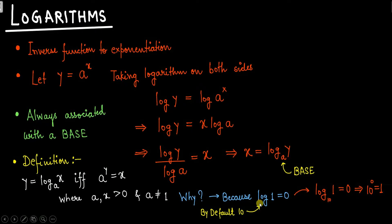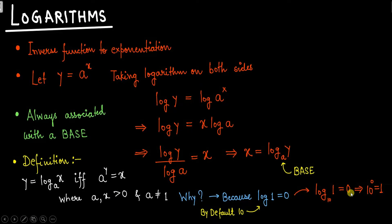The base a should not equal 1. Why? Because we know that log 1 is 0. If nothing is mentioned, by default the base is considered to be 10. So log 1 can also be written as log 1 to the base 10 equals 0, because 10 to the power of 0 equals 1.